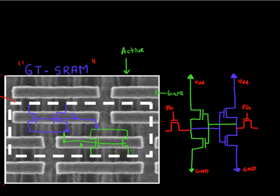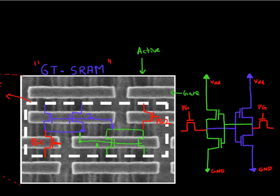Shown here are the two inverters, connected using pass-gate transistors located here. This is the first pass-gate transistor and this is the second. We've now been able to locate the two pass-gate transistors and the two inverters. This is how the circuit diagram translates onto the top view, and this is the most compact way to pack these six transistors onto your die. Now that we've enjoyed the aerial view, let's look at the side view.